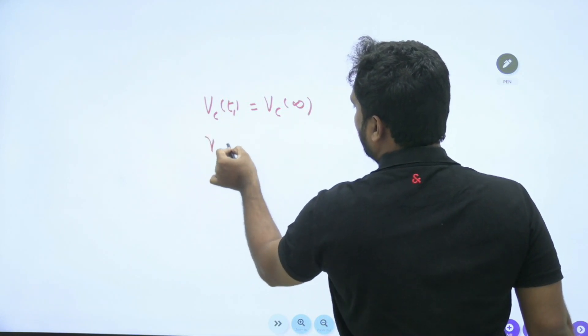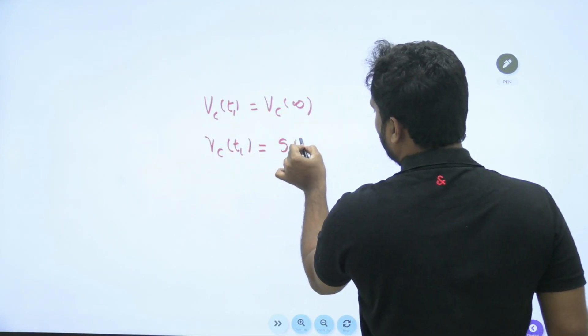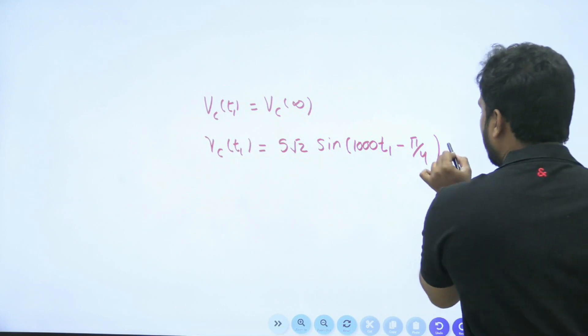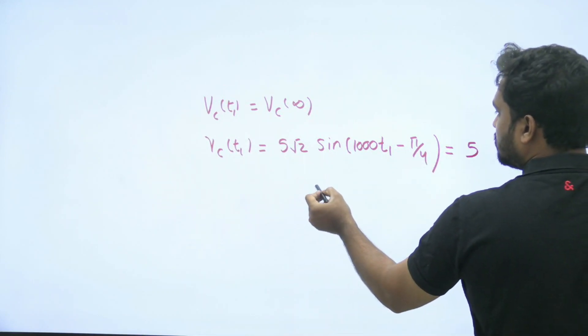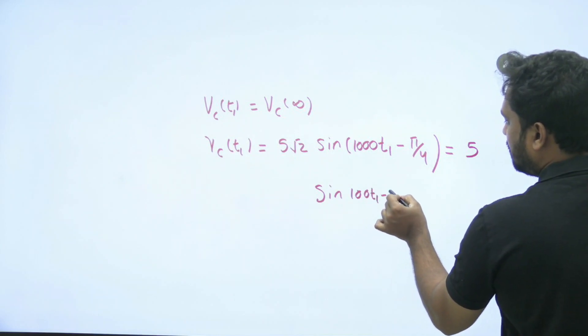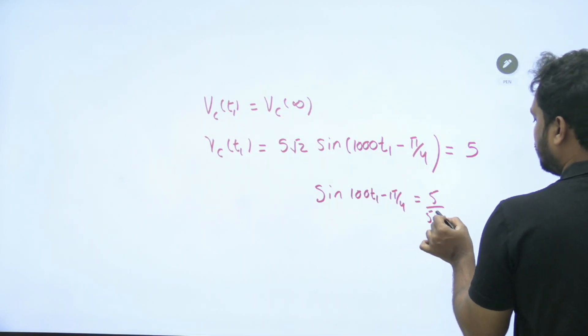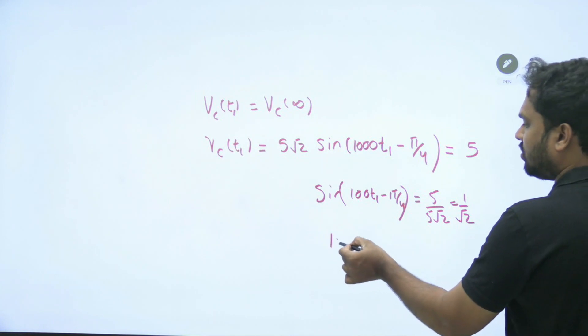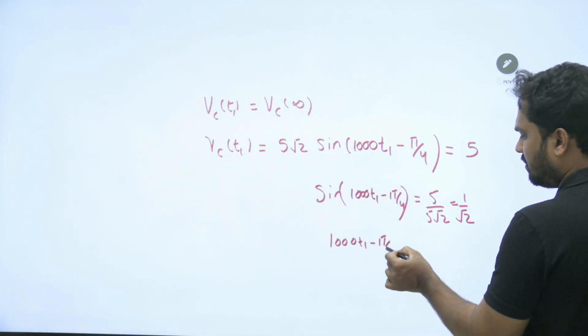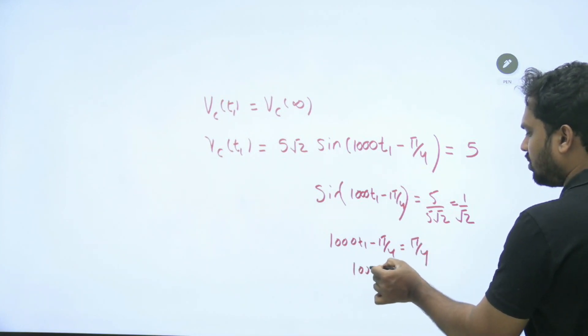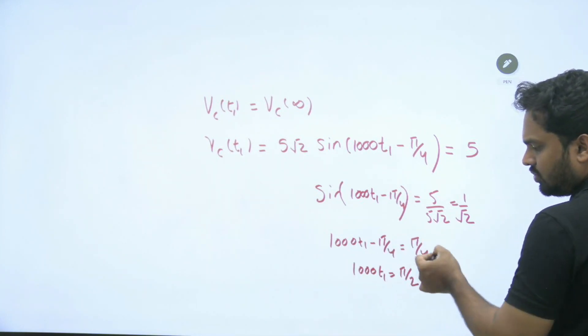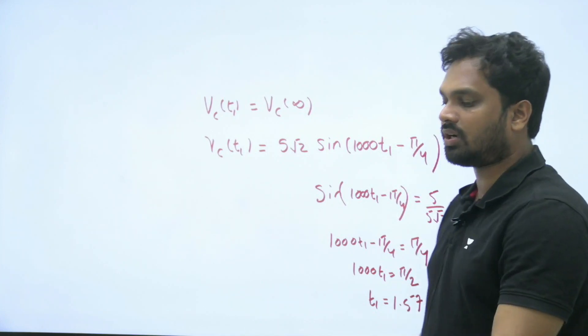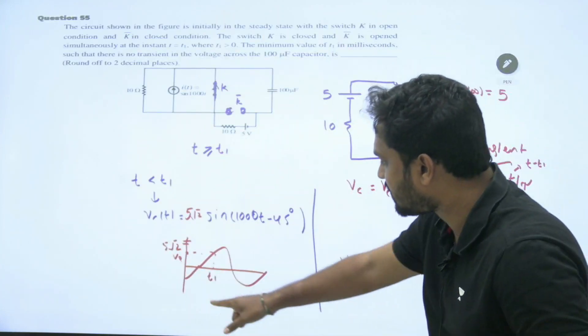Now what is my required condition? VC of t1 must be equal to VC of infinity. What is VC of t1? 5 root 2 sine 1000t1 minus 45 degrees, I am writing pi by 4. This must be equal to 5. So sine 1000t1 minus pi by 4 must be equal to 5 by 5 root 2, 1 by root 2. So sine theta equal to 1 by root 2, theta equal to 45 degrees. So in radians, it is 1000t1 minus pi by 4 must be pi by 4. 1000t1 must be pi by 2 because you add this. t1 equal to 1.57 milliseconds.